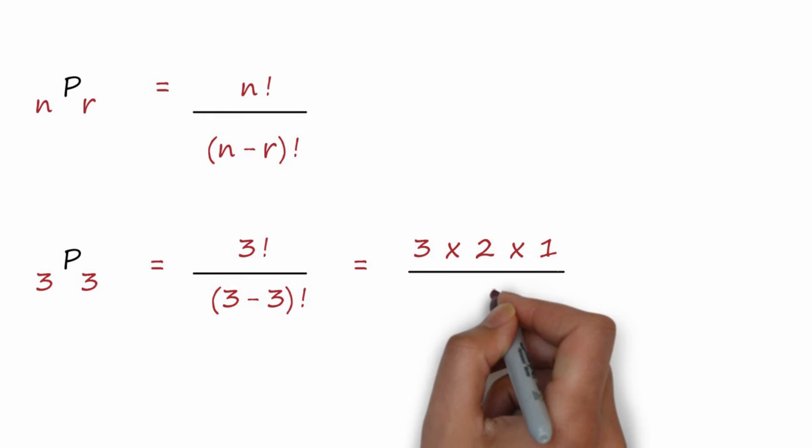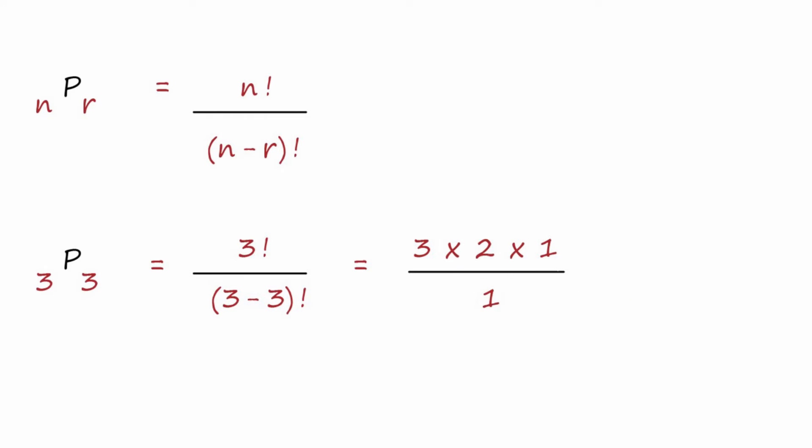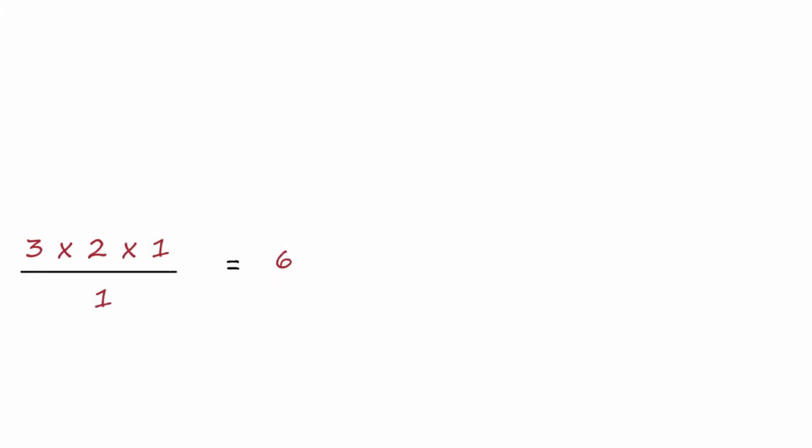Zero factorial is actually equal to one, so you can see we have three times two, which is six, and that's how we got our answer.